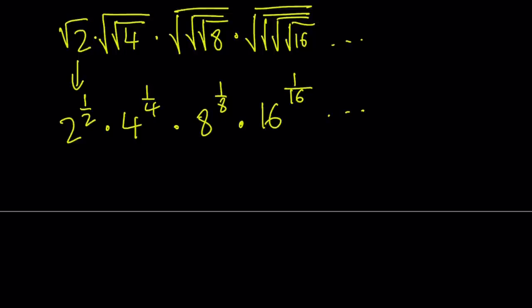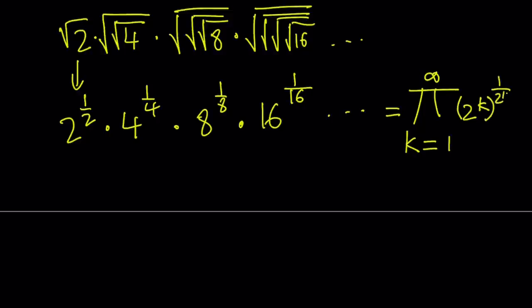We can write this using the pi symbol — the multiplication symbol — as a product from k equals 1 to infinity, where the base is 2 to the power k, raised to the power 1 over 2 to the power k. That looks complicated, so I'm going to write it as a sum instead. Now since we're multiplying powers of 2 — 4, 8, 16 — they're all powers of 2, and all of these numbers can be written as powers of 2.